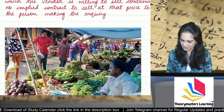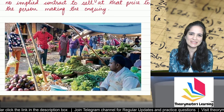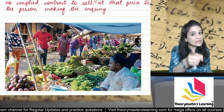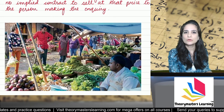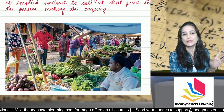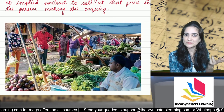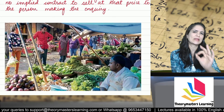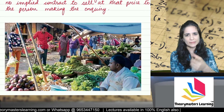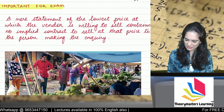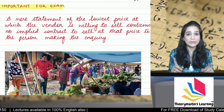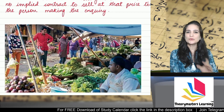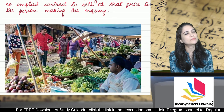Let's understand with an example. You go to buy vegetables — a very common example. You ask: bhaiya, tomatoes at what price? He looks at you and says: 80 rupees per kilo. That doesn't mean he is ready to sell at 80 rupees. You cannot say: okay, give me 1 kg — and he has to give it. He could say: no, I don't want to sell to you; you bargain too much. What you asked was: bhaiya, tomatoes at what price? He simply replied: 80 rupees per kg. He just answered your question.